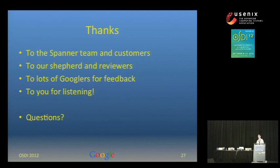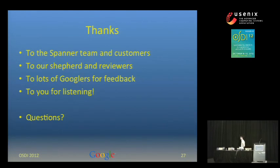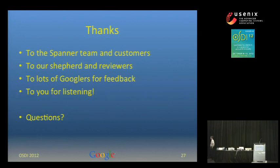An audience member from Cornell asked whether external consistency and strict serializability are equivalent terms — the speaker confirmed they are. Another questioner from Microsoft Research asked why a precise timestamp is always assigned rather than sometimes allowing a range by intersecting beginning and ending times. The answer is that data is stored indexed by the timestamp at which it was written, so if you want to read data at time 50, you look at time 50 and find the first data written before that point. With slop in the interval, you wouldn't know what data to actually read.